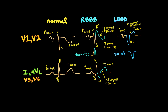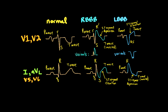In leads 1, AVL, V5, and V6 for left bundle branch block: the P wave is upright and normal, and the PR segment is normal. The QRS complex shows an absence of septal forces with prolonged LV free wall forces, appearing as a dominant big R wave. The ST segment is depressed and the T wave is inverted — secondary ST segment T wave abnormalities for LBBB in leads 1, AVL, V5, and V6. A variation includes notching on the R wave.